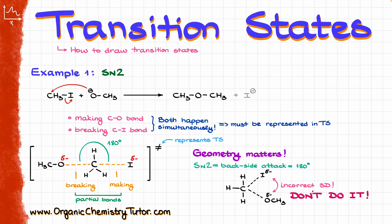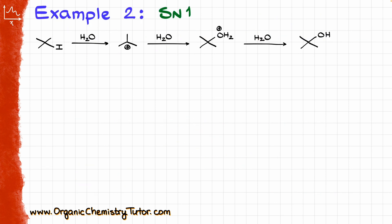Make sure you are being conscious about your bond angles when drawing those types of things. Now let's look at the next example: the SN1 reaction. We know that SN1 reactions are multi-step processes — in this case we have three steps: step one, step two, and step three. Since we have three steps in this reaction, we are going to end up drawing a transition state for each of those steps.